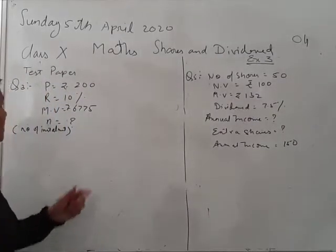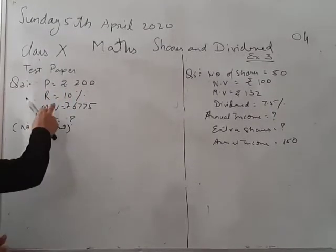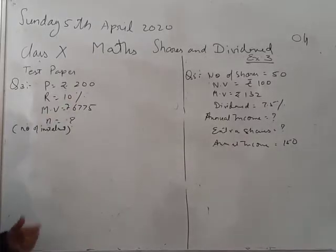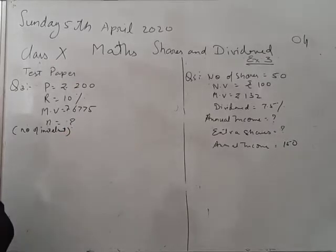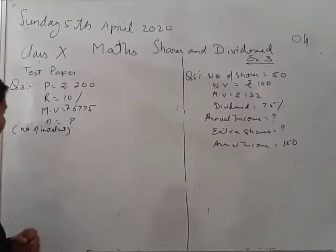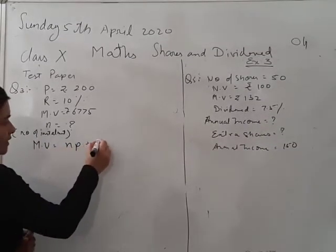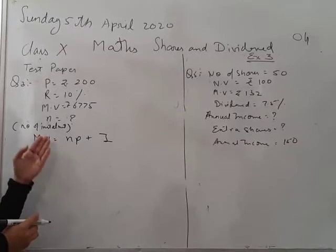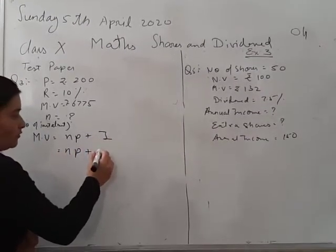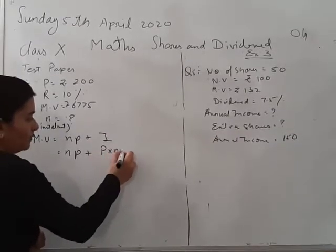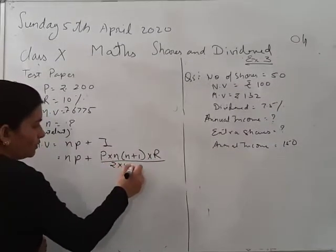In question number 3, the principal monthly installment is given to you as rupees 200, rate of interest is 10%, maturity value is 675, and we have to find out the number of installments. The formula for maturity value is NP plus I, but I is also not given and N is not given. So we will substitute the value of I as well. The formula for I is P into N(N+1) into R upon 2 into 12 into 100.